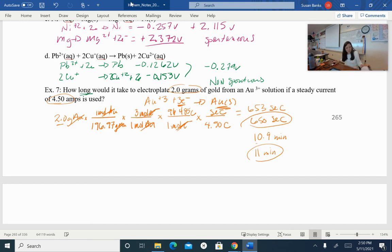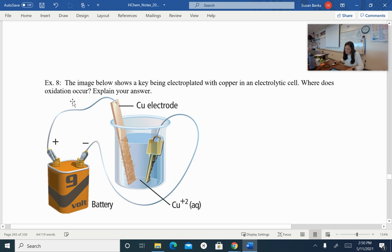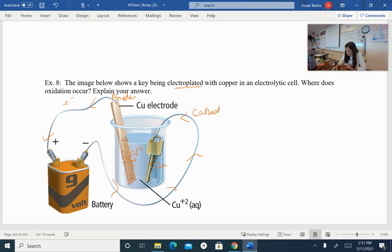So when we look at this, we would have a setup like this. The image below shows a key being electroplated with copper in an electrolytic cell. So where does the oxidation occur? Now notice, if I am going to use this to plate, that means the copper is going to copper plus two, and then the copper is plating here. So that means that the electrons are traveling this way. So electrons are going this way. So the copper electrode is losing electrons. So this is acting as my anode. And the key is gaining electrons. This is acting as my cathode.